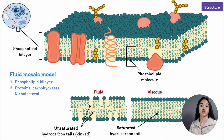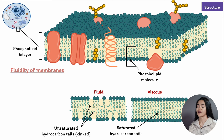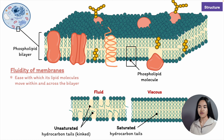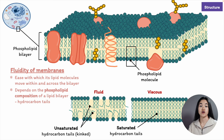Nothing stops membrane lipids from moving around and swapping places with one another — they're quite free. These lipid molecules are able to move within their own monolayer, which is crucial for cell membranes to function properly. The fluidity of cell membranes is crucial for the activity of transport molecules and enzymes within the membranes. Fluidity is the ease with which lipid molecules move within and across the bilayer. How fluid a lipid bilayer is at a given temperature depends on the phospholipid composition, specifically the structure of the hydrocarbon tails.